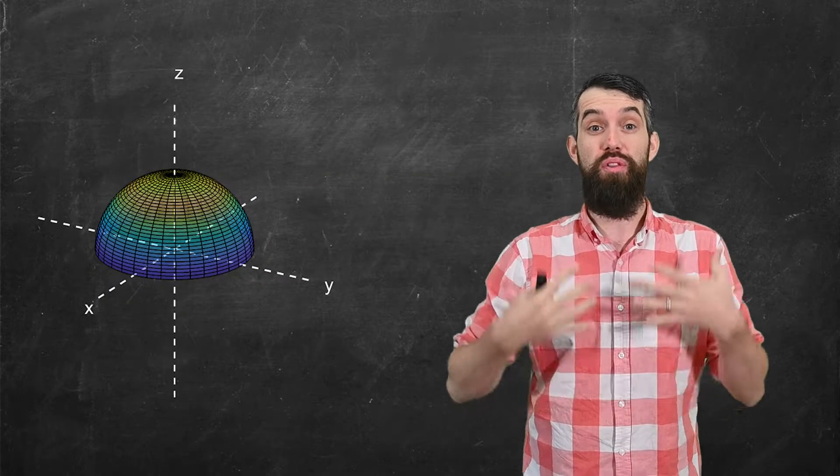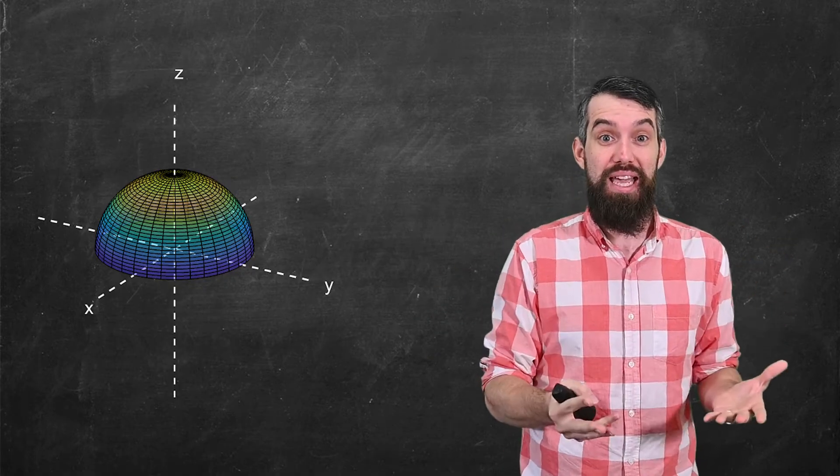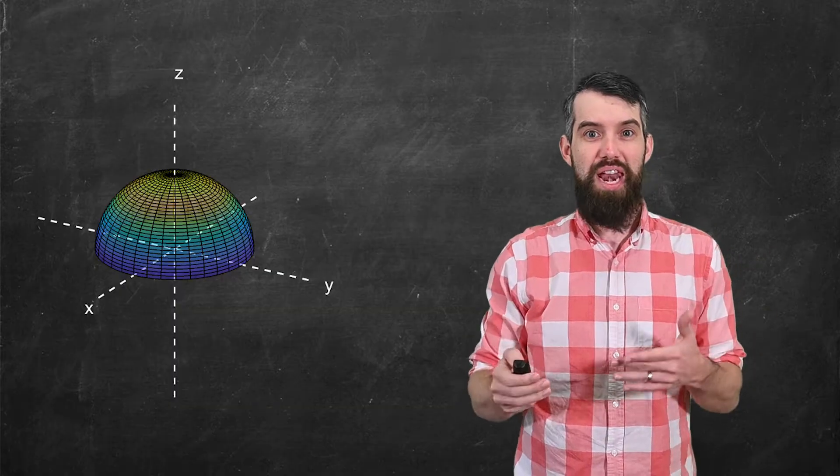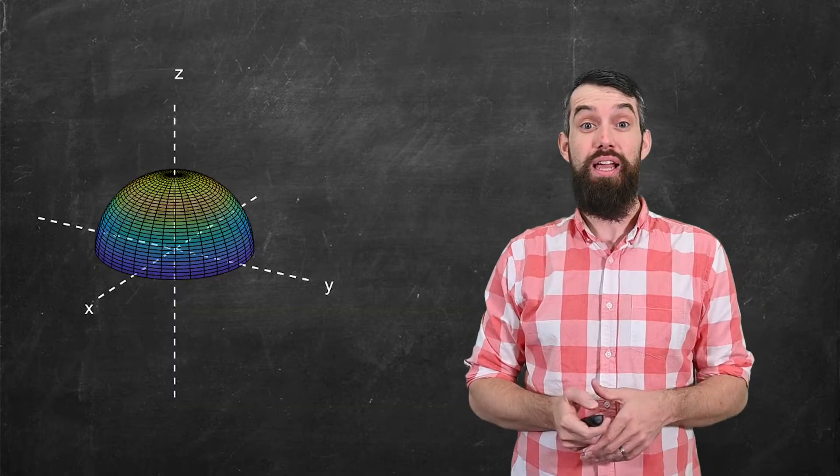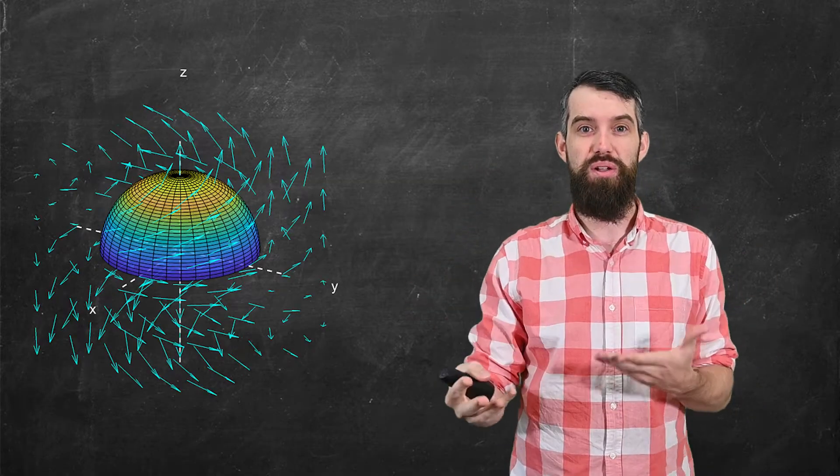In this video, we're going to talk about the flux across a surface. I want to begin with a surface, like for example, this is the top half of a sphere, and then I'm going to imagine that the surface is living in some sort of vector field. These blue arrows are indicating a vector field.